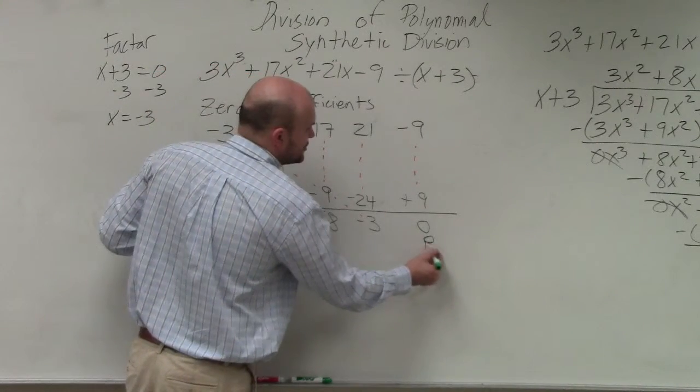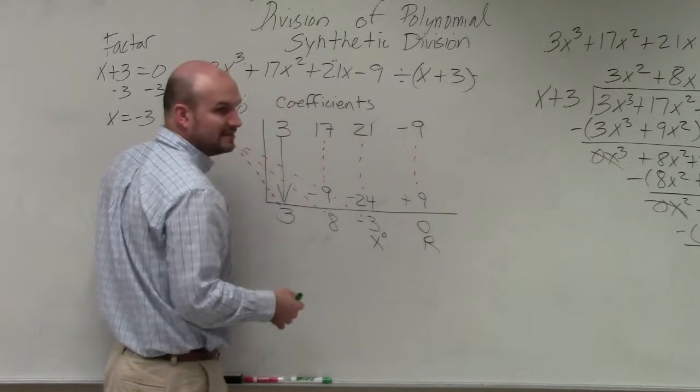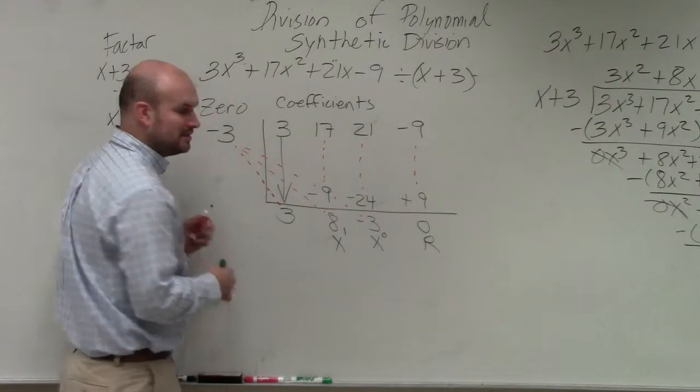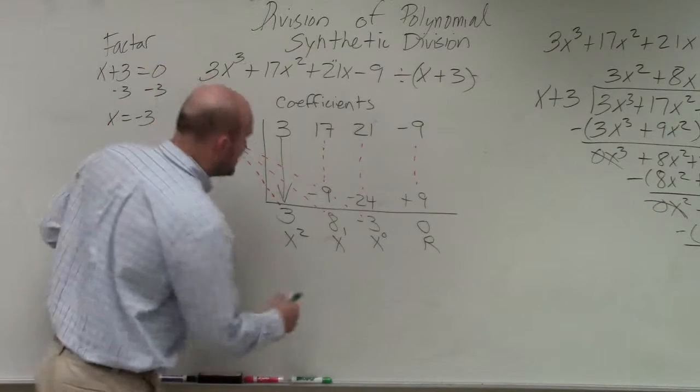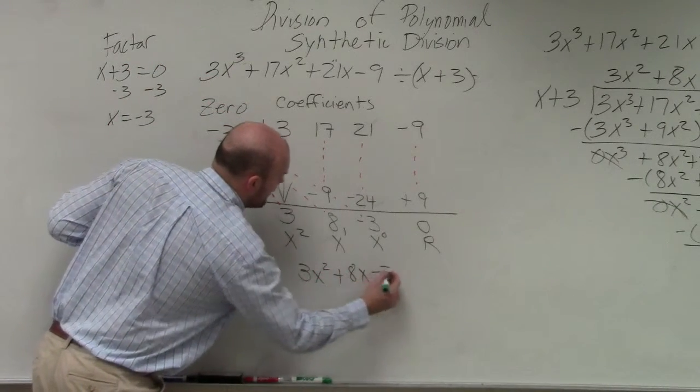This is your remainder. This is your coefficient to your constant or your x to the zero. This is your coefficient of your linear. And this is the coefficient of your quadratic. So therefore the answer is 3x squared plus 8x minus 3.